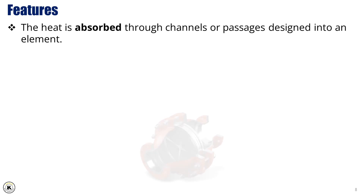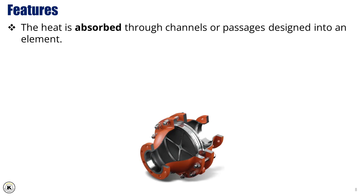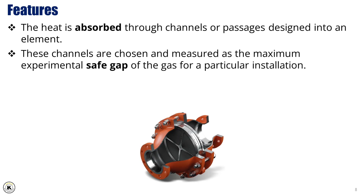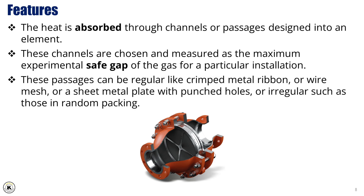The heat is absorbed through channels or passages designed into an element. These channels are chosen and measured as the maximum experimental safe gap of the gas for a particular installation. These passages can be regular, like crimped metal ribbon, wire mesh, or a sheet metal plate with punched holes, or irregular, such as those in random packing.